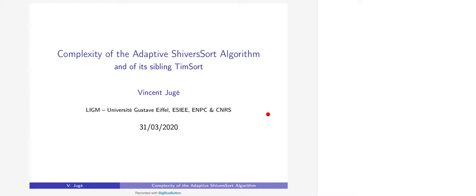I'm going to talk about an algorithm I call Adaptive Shiver Sort, which is a variant of TimSort — a widely used sorting algorithm. Today's talk will explain why TimSort is an interesting algorithm and what its features are, and then describe how I adapted those features slightly to improve the complexity of the algorithm, giving us Adaptive Shiver Sort. At the end I plan to give a proof of complexity of Adaptive Shiver Sort.